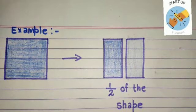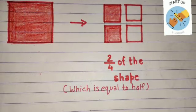See this square. I have divided it into two parts. Each part is half of the square. And this red square, I have divided into four equal parts. And two fourths of this shape is shaded here.